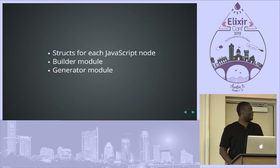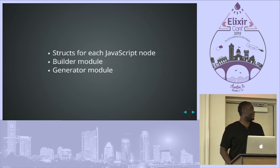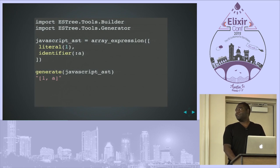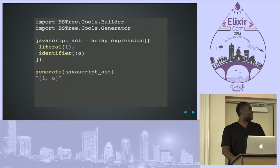The problem was that was a very timely process. One of the examples I'm going to show — when I was doing it that way with maybe six files — it took like 20 seconds. I was like, this is not acceptable. So I created a small generator module that just takes the abstract syntax tree and turns it into JavaScript code. Here's an example: I'm importing the builder and generator, building an array with a one and a variable, and the generate function takes that JavaScript AST and turns it into a JavaScript array. It's a totally separate library available for anyone to use.